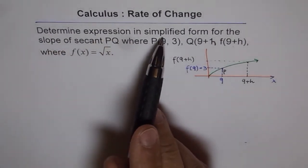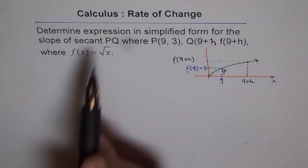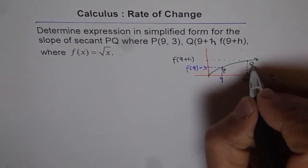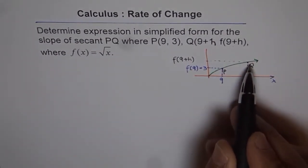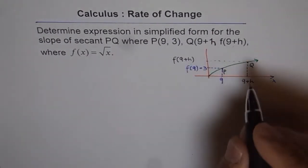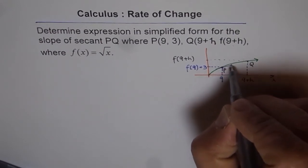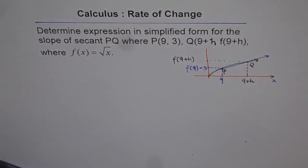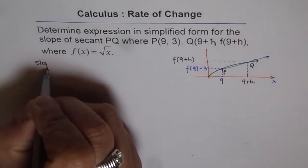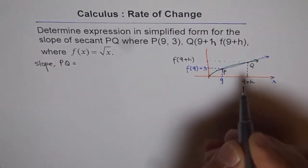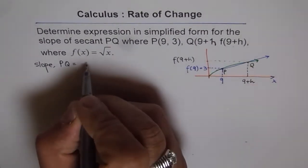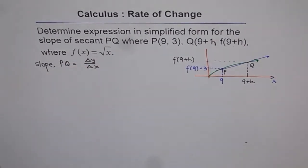So Q has x-value 9+h and y-value f(9+h). We need to find the slope of the secant, meaning the line joining P and Q. Slope of a line, as we know, is rise over run, so we can write slope of PQ as Δy over Δx.